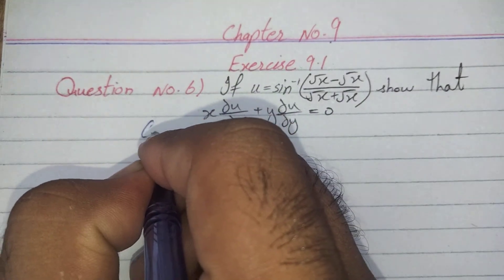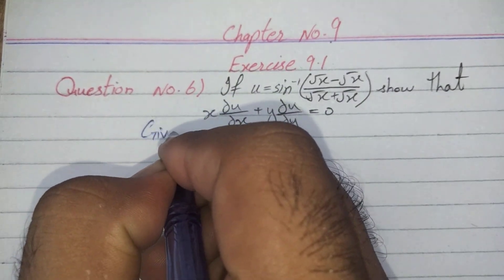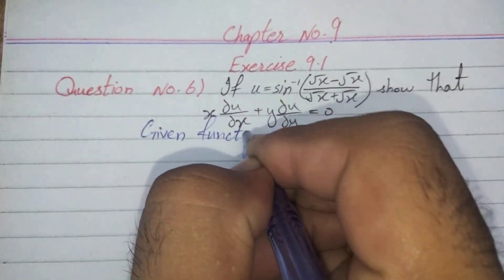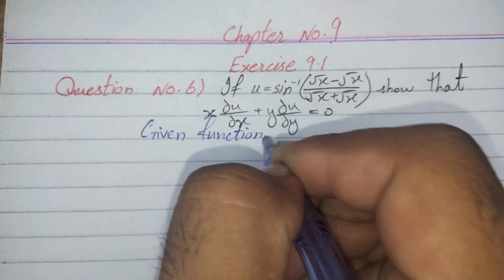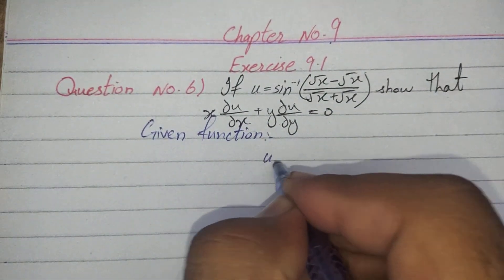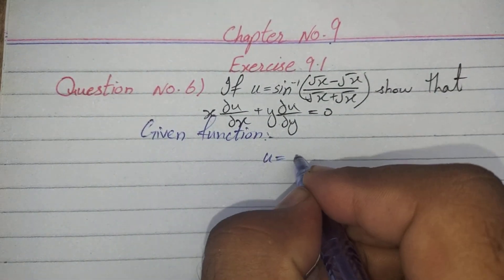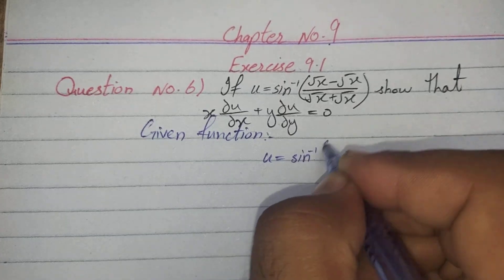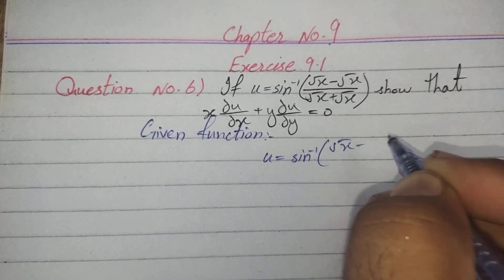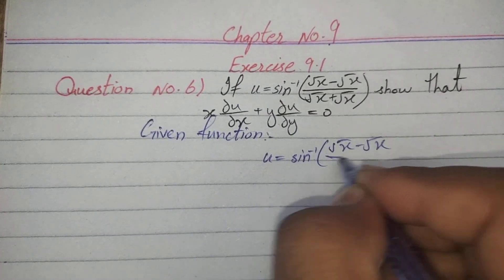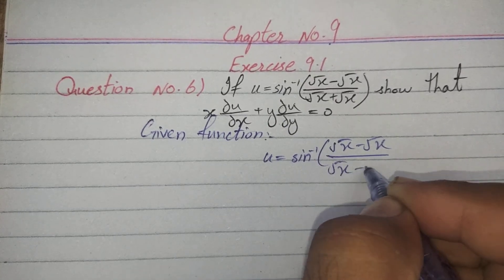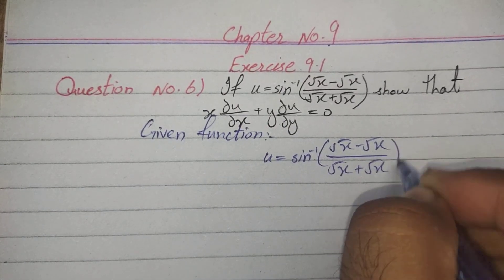Given function: u is equal to sin inverse of (√x − √y) over (√x + √y).